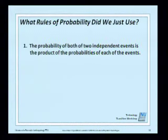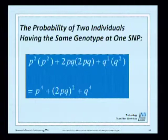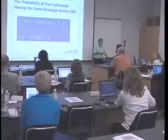The probabilities of two independent events is the product of each, or two or more mutually exclusive events is the sum. So the probability of two individuals having the same genotype at one SNP is this — simply the difference between one and the previous one.